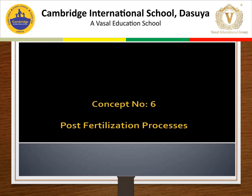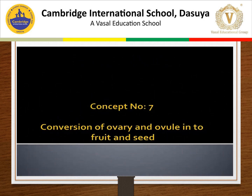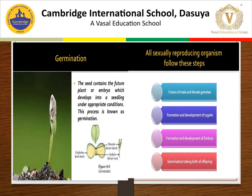After fertilization — post-fertilization changes: the zygote divides several times to form an embryo within the ovule, and the embryo gradually develops. The ovule develops a tough coat and is converted into a seed. The ovary grows rapidly and ripens to form a fruit. Meanwhile, petals, sepals, stamen, style, and stigma wither and fall. In germination, the seed contains the future plant or embryo, which develops into a seedling under appropriate conditions. The radicle is the future root, the plumule is the future shoot, and the cotyledons help store food.